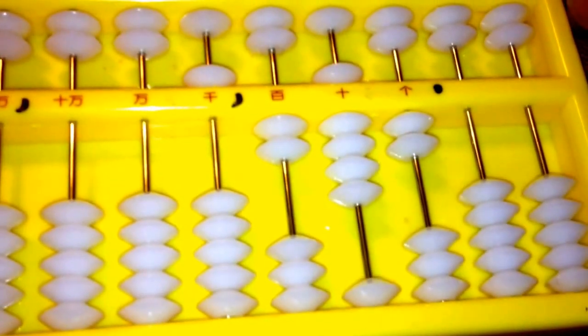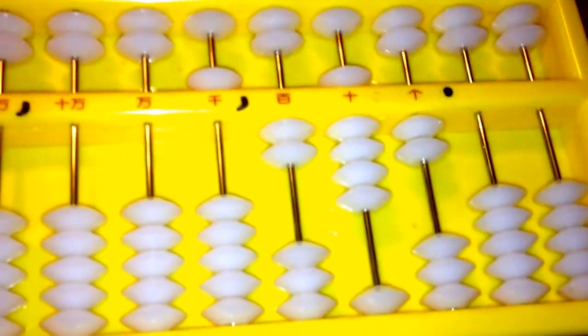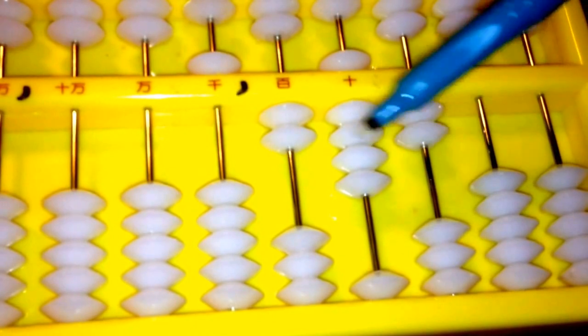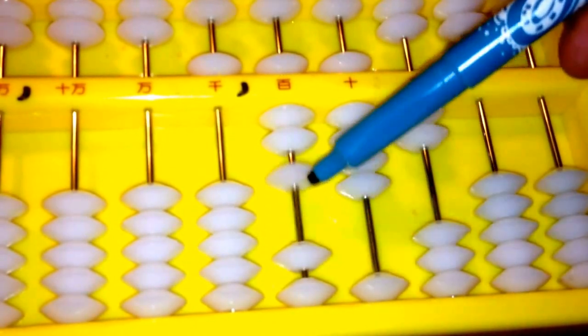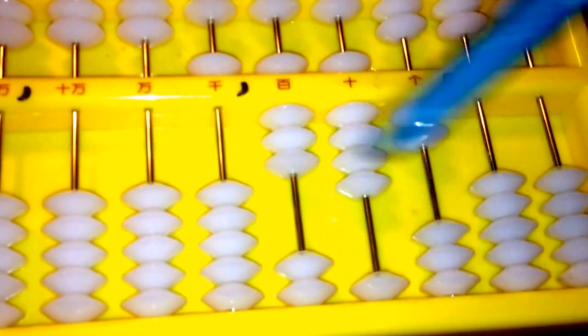Then we have 2 times 3, our middle digits. We're still on our third one. So that's 6. So we pull down a 5, and 1. That's 6.